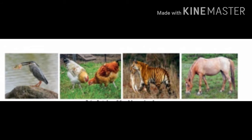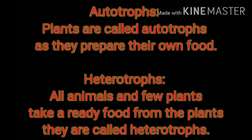Animals, however, do not have chlorophyll. They do not produce their own food — they search for food. Animals such as goats, sheep and horses eat grass, while wild animals such as tigers and lions meet their need for food by hunting other animals which live on plants. Plants are called autotropes as they prepare their own food. All animals and a few plants take ready food from other plants and are called heterotropes.